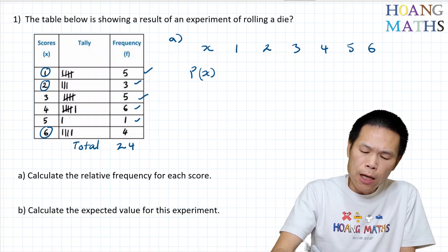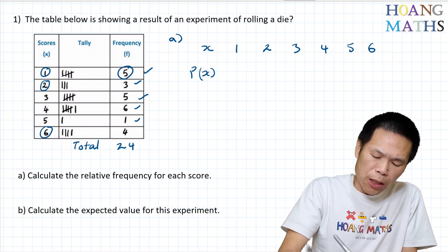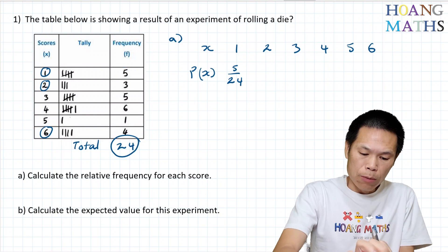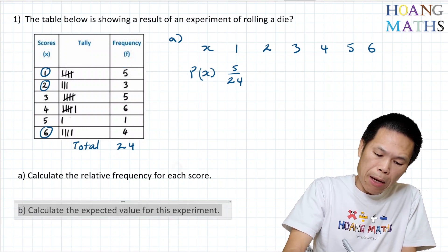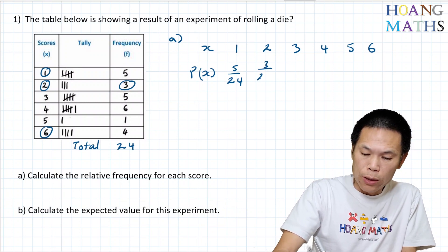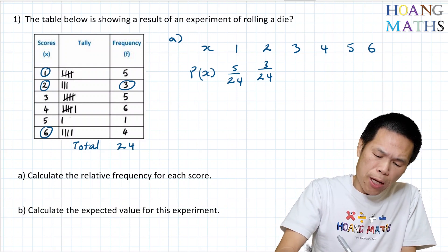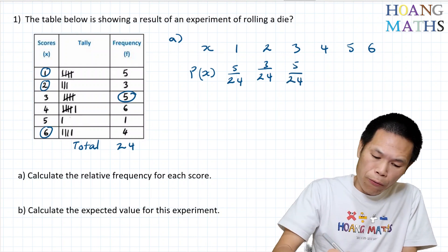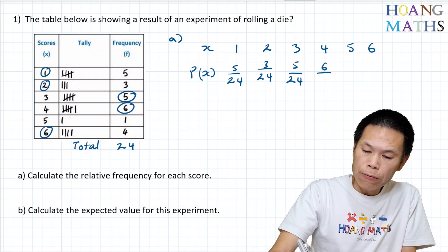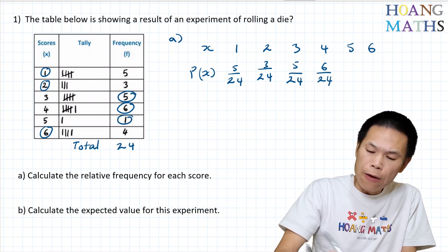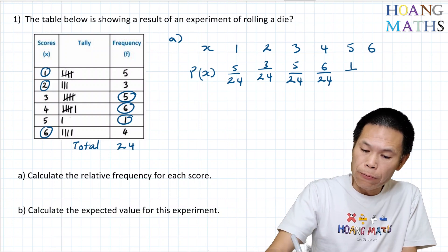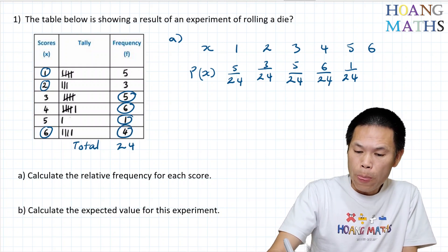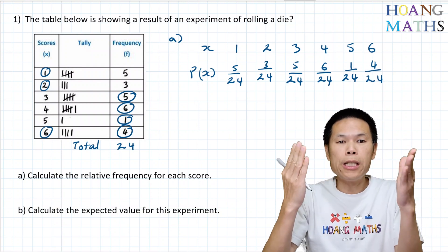The probability of getting score 1: it comes out 5 times, so the probability is 5 over 24. The probability of score 2: it comes out 3 times, so 3 over 24. The probability of score 3 is 5 times, so 5 over 24. The probability of score 4 is 6 out of 24. The probability of score 5 is 1, because it came out once, so 1 over 24. And the probability for score 6 is 4, so 4 out of 24. This is the probability distribution.